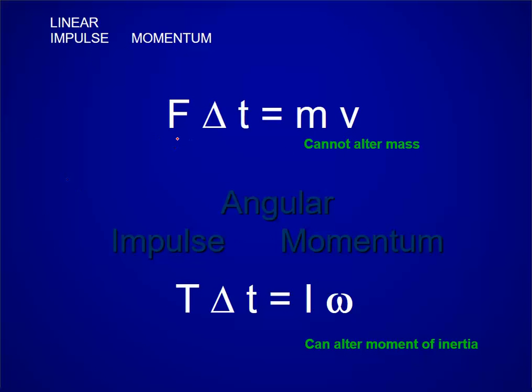So let's compare these. In the linear world, impulse is force times time. It results in momentum, mass times velocity, or the quantity of motion. You cannot alter the mass.